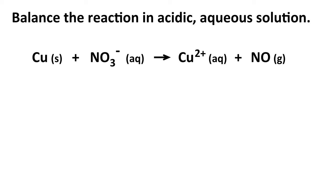When we have a redox reaction, we usually want to figure out what was oxidized and what was reduced. Sometimes that's straightforward by inspection — copper solid forming the copper 2+ ion clearly loses electrons and is therefore oxidized. But it's not always as easy; you might not be able to look at the nitrate ion and nitrogen monoxide and immediately see the electron transfer. In that case, it's best to use oxidation numbers for all substances in the reaction.